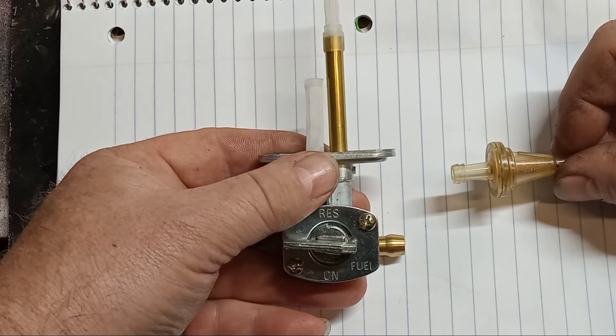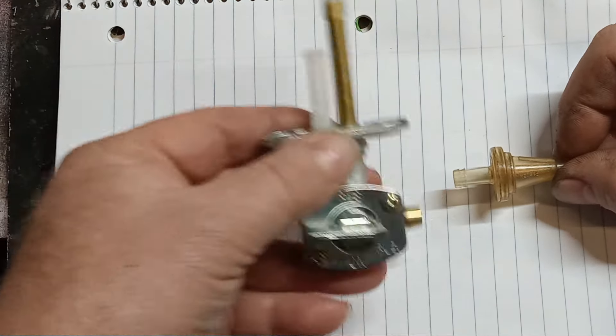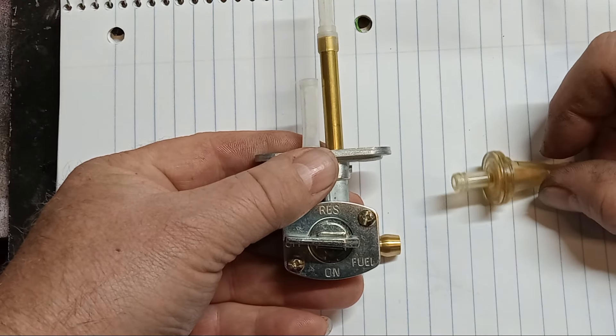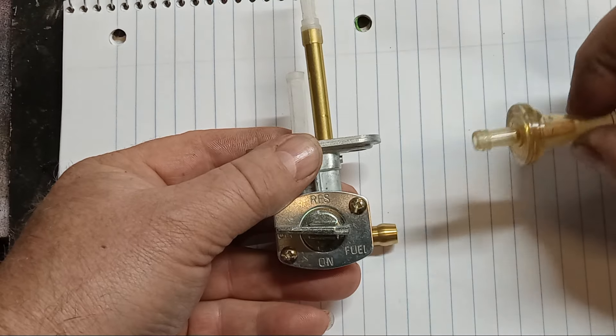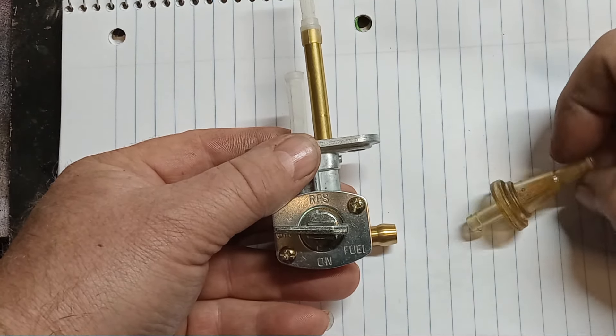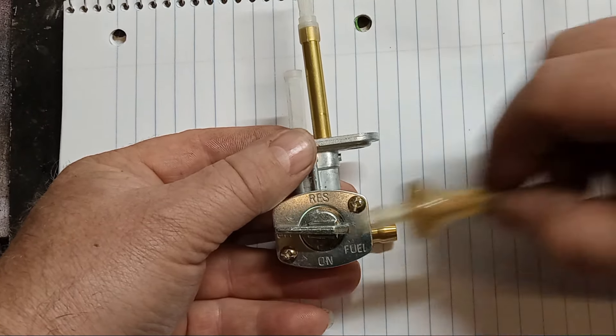The downside to these, of course, is you have to remove the petcock to clean them, whereas if you use the inline, you can just shut the petcock off, replace or clean your inline filter, put it back on, then turn your fuel back on.